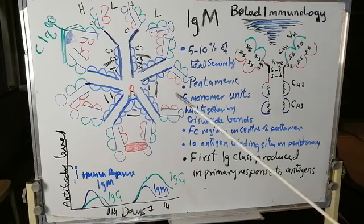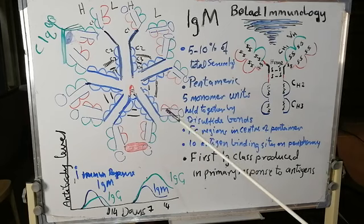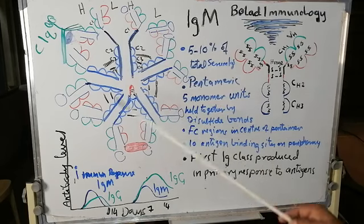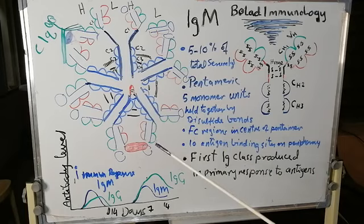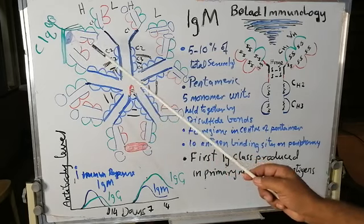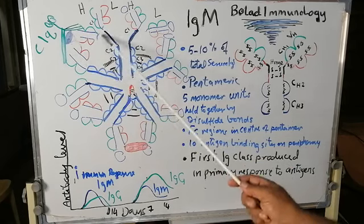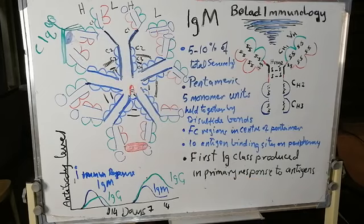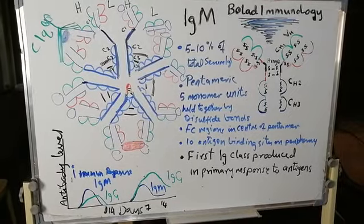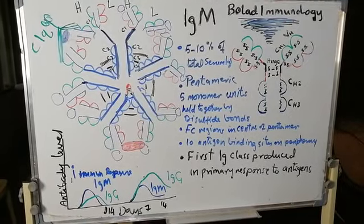For activation of the classical complement pathway, two antibody molecules are required in the case of IgG. However, in the case of IgM, only one molecule is required to bind C1Q, complement component number 1. As can be seen here, IgM is more efficient in activating the classical pathway of complement.